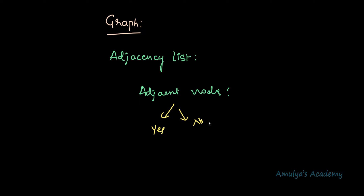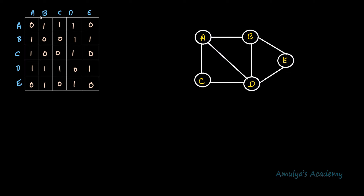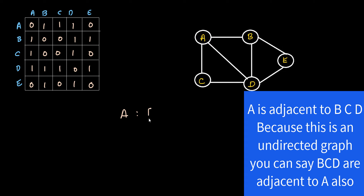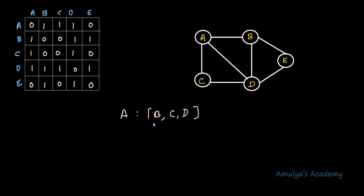So what we do in the adjacency list — today we will talk about that. In the adjacency list, instead of storing both results like the adjacency matrix, we only store the adjacent nodes of each node; we store the list of adjacent nodes of every node. For example, we need to write down which nodes 'a' is adjacent to. Because this is an undirected graph, b, c, and d are the adjacent nodes of a.